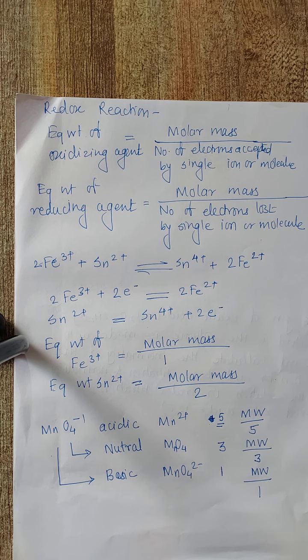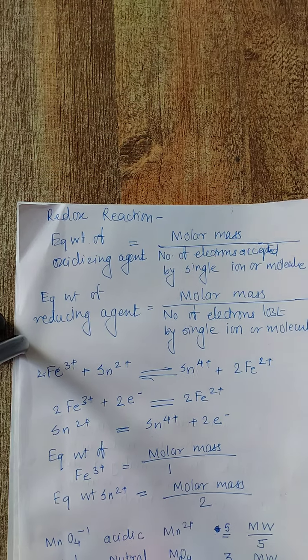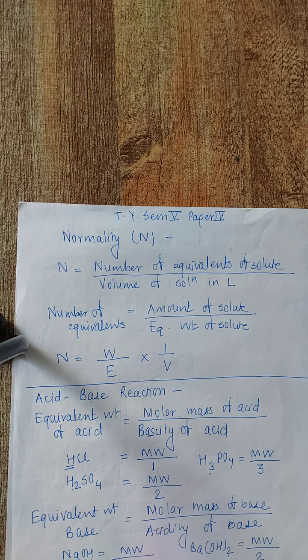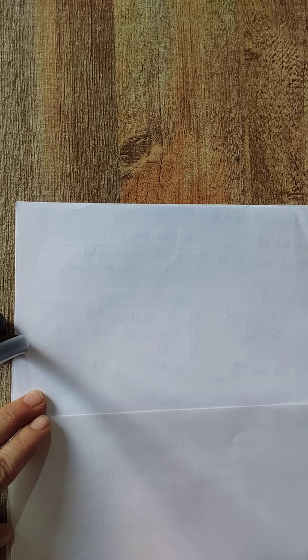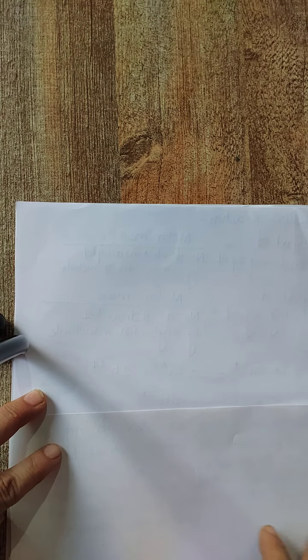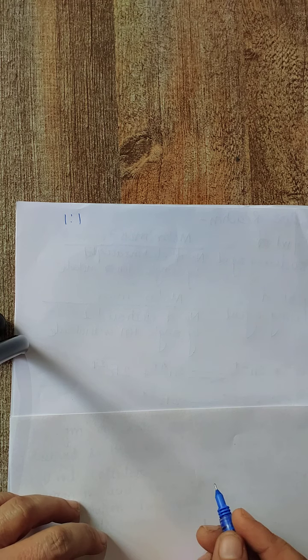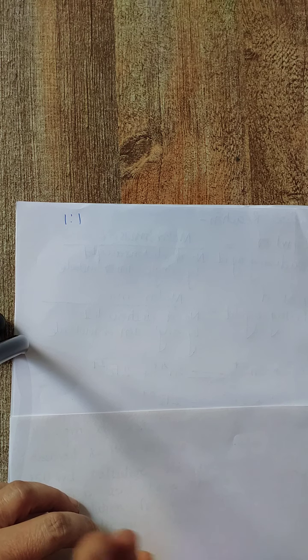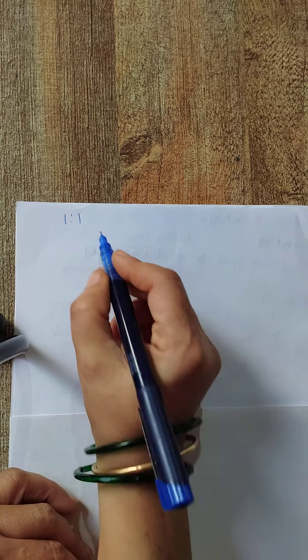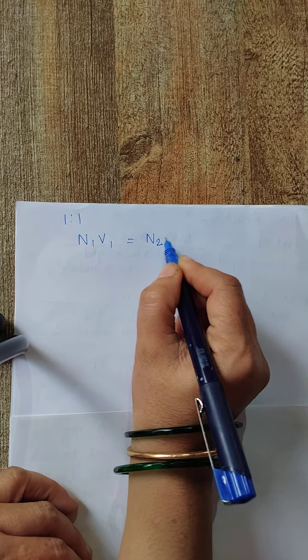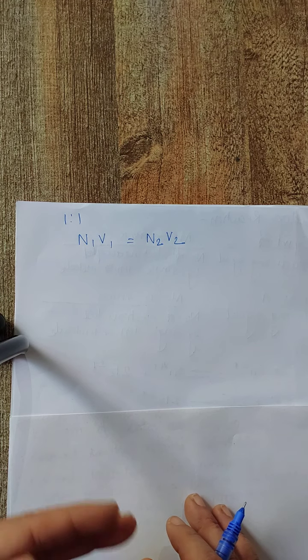Now we discuss the advantage of normality. The main advantage is that whenever you use normality, two reacting species will always have a stoichiometry of 1 to 1. This stoichiometric ratio of 1:1 is not possible with molarity or formality. Hence we are able to use the formula N₁V₁ = N₂V₂, which makes calculations very easy.